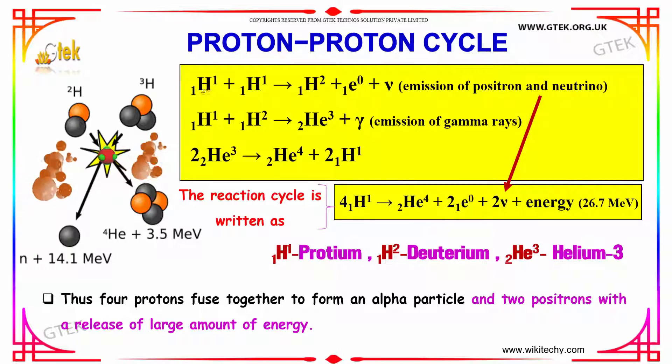You got your proton, the hydrogen-1, and another proton which forms a deuterium with the emission of a positron and neutrino.